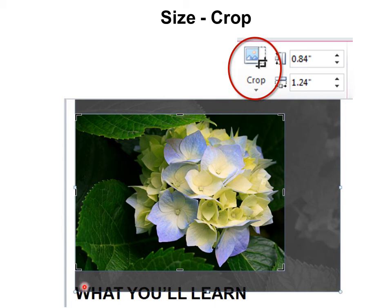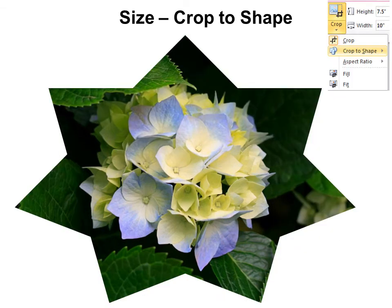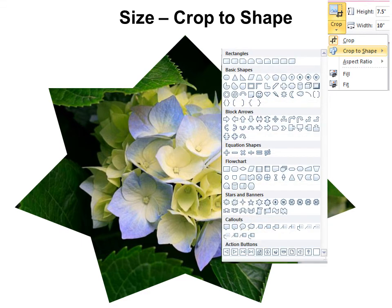What you do is you take these lines and you drag them in. You push the lines, essentially, to resize the picture to take out the parts you don't want. However, now we have the option to actually crop to a shape. And so all the usual cast of characters that we have for our shapes, you can use as the cutting tool.